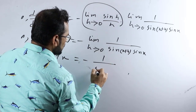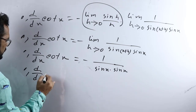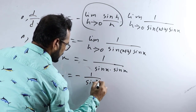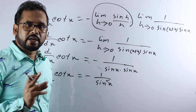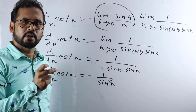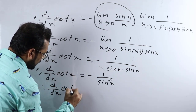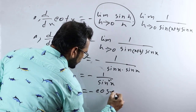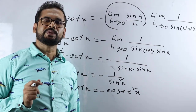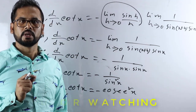Now applying the limit, h tends to 0, so sin(x+h) becomes sin x. Therefore d/dx of cot x equals minus one divided by sin x times sin x, which is minus one over sin squared x. Since one divided by sin x equals cosec x, this equals minus cosec squared x. This is our desired proof. If you find this video helpful, please subscribe, like, and share. Thank you very much.